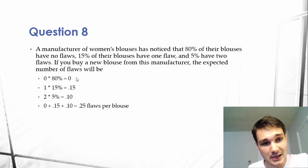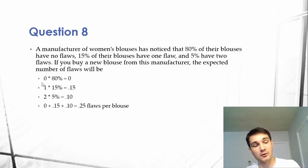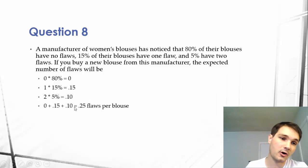Then we're going to add all of these up because these are all of our expected values at this flaw level. So 0 times 80% equals 0 for our zero flaws. 1 times 15% equals .15 for our one flaw. 2 times 5% equals .10 for our two flaws.